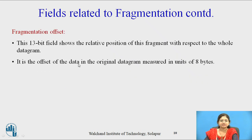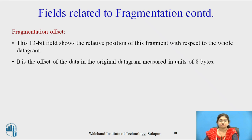The third important field is fragmentation offset. This 13-bit field shows the relative position of this fragment with respect to the whole datagram. It is the offset of the data in the original datagram measured in units of 8 bytes.